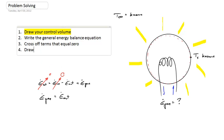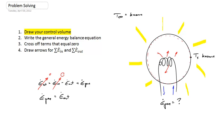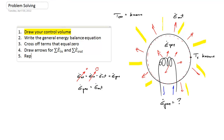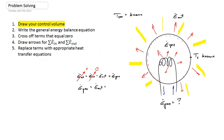Step four is to draw arrows summarizing all the different rates at which energy can enter and leave the system. For this problem, energy is being generated by the coils — E_gen within the light bulb — and E_out leaves by convection from the hot light bulb into the cold surroundings. Step five is to replace the terms with appropriate heat transfer equations. E_out equals the average heat transfer coefficient h-bar times the surface area times (T_s minus T_infinity). Be careful with signs: E_out is positive when energy leaves, which requires T_s greater than T_infinity.